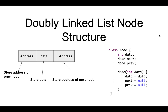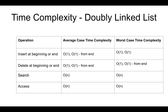Now let's see the node structure for a doubly linked list. The data is of integer type, there is a previous pointer of type Node pointing to the previous node, and a next pointer of type Node pointing to the next node.